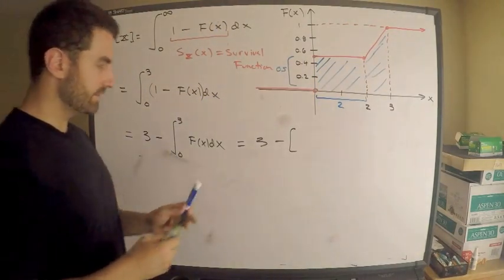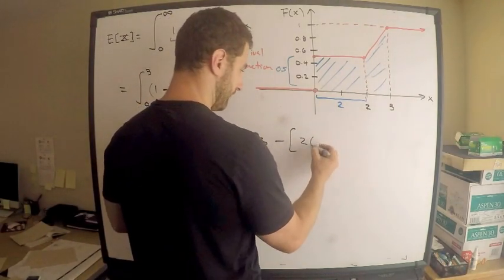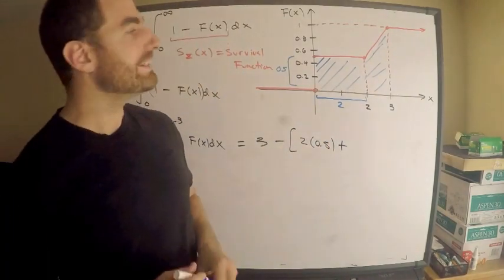So, that area there is, well, it's a rectangle. So, 2 base times width, 2 times 0.5. Plus, we're going to get a little tricky here.